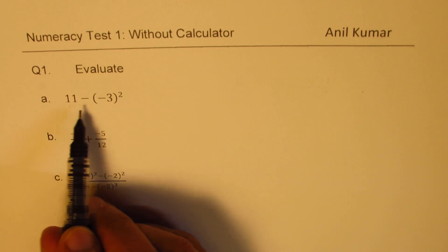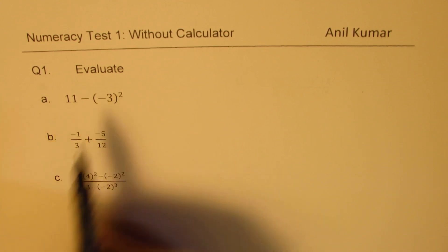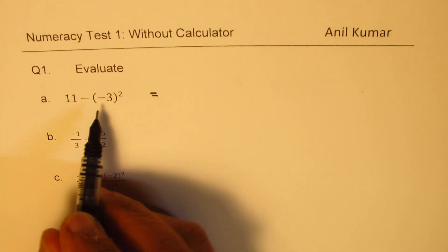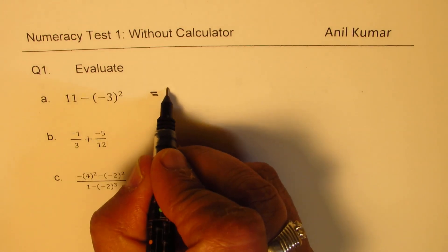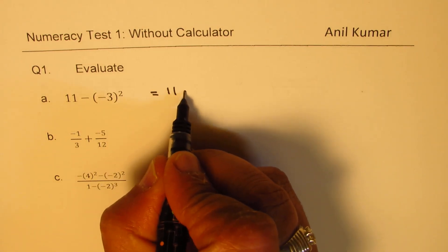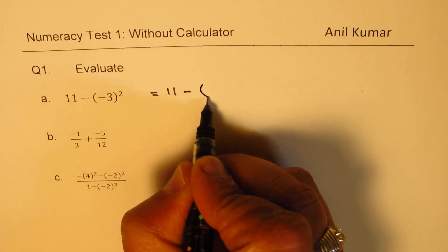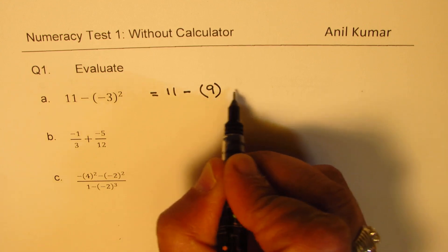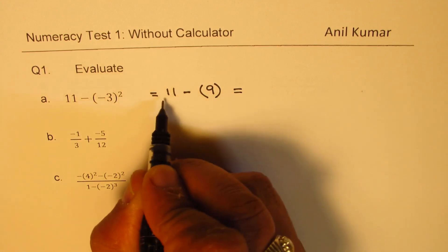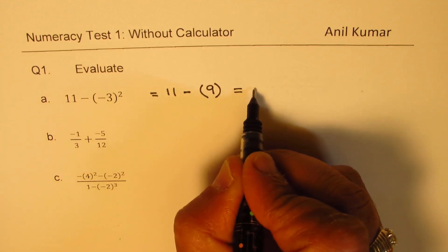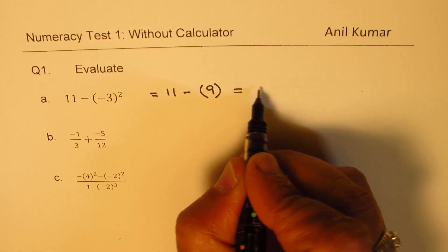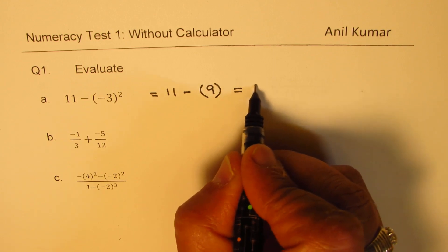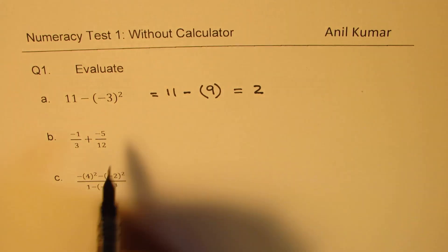We have 11 minus (-3) whole square. First we have to do things in the bracket — (-3) squared is 9. Now we do 11 minus 9, and that gives us the value 2. So 2 is the answer.